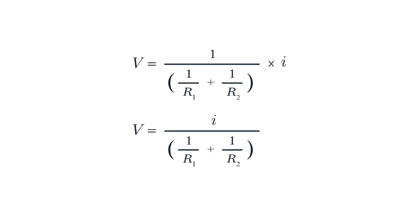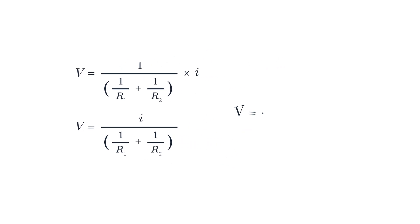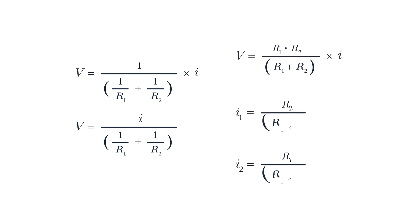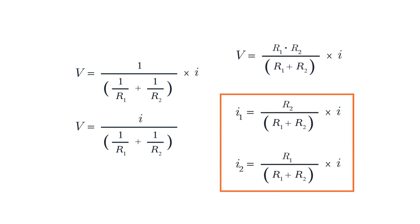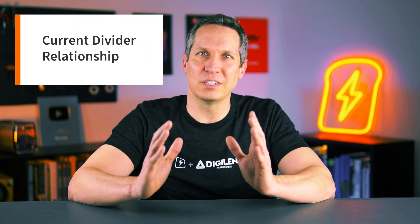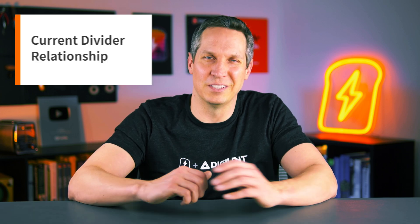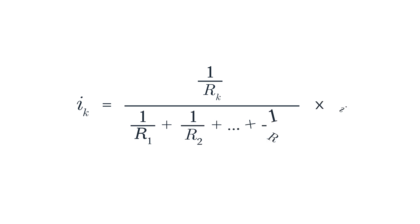We can use Ohm's law again to state that the voltage across the nodes can be written as the product of the equivalent resistance and the current. Using these equations, we can find the relationship between the individual currents and the resistors in a parallel circuit. The total current entering the parallel combination is divided among the individual resistors. These equations are called the current divider relationship, where the ratio of the current through one resistor to the total current is equal to the ratio of the other resistor's resistance to the total resistance of the parallel combination.